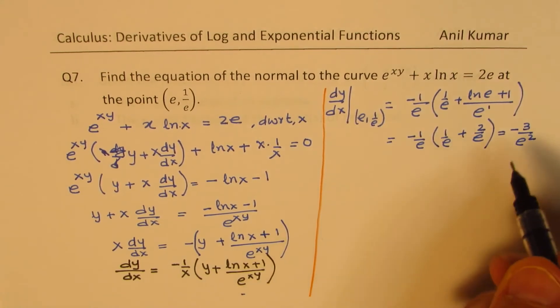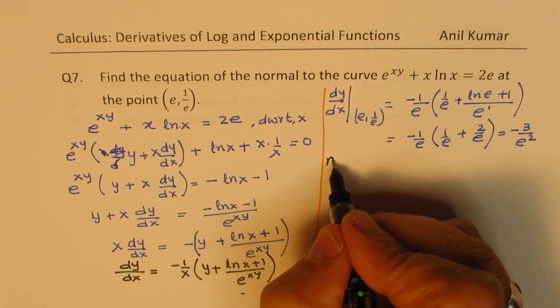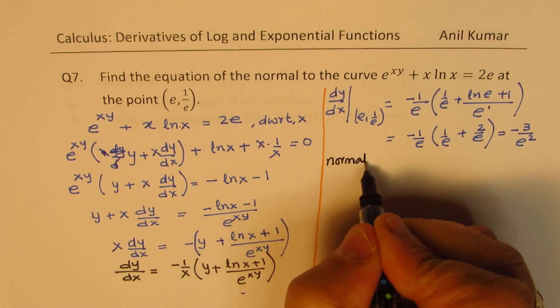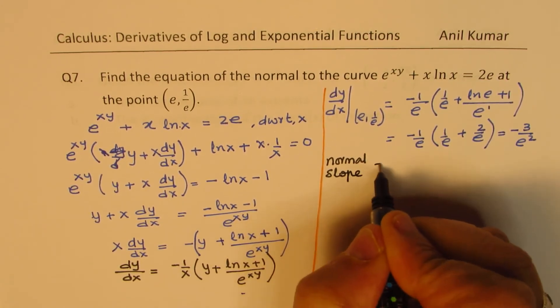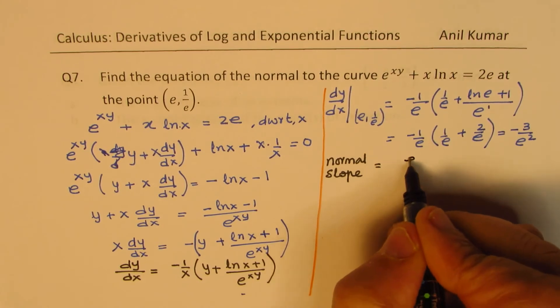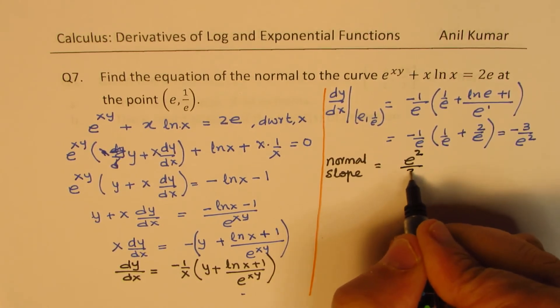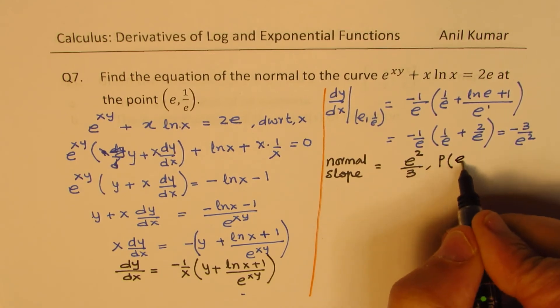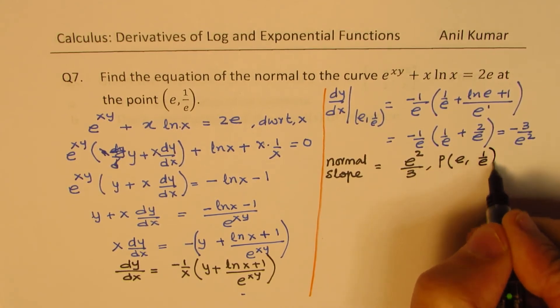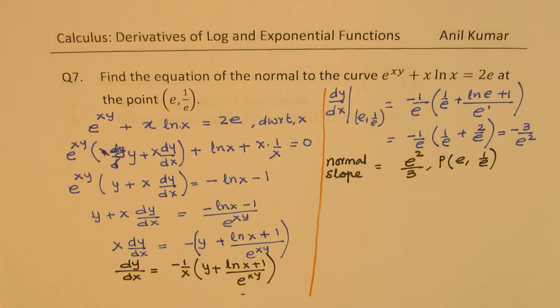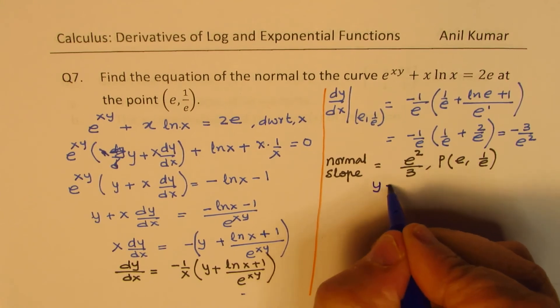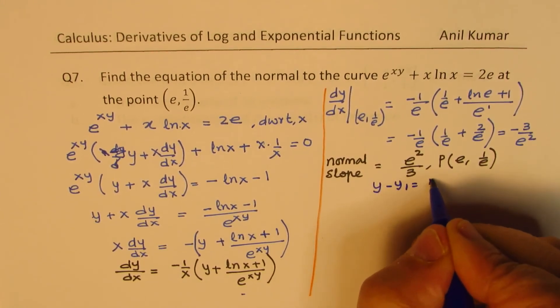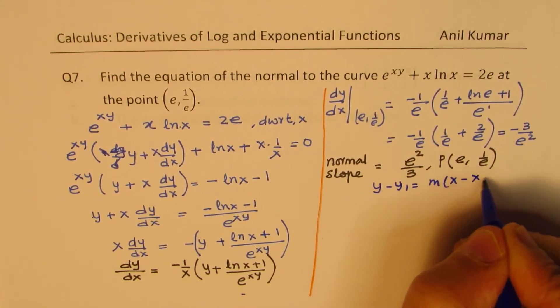From here we can find the normal. The normal slope will be the negative reciprocal, or e^2/3. We are considering the point P to be (e, 1/e). So we have to find the equation of the normal. We'll write the equation in the form y - y₁ = m(x - x₁).